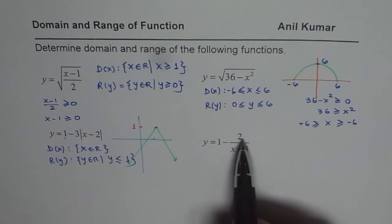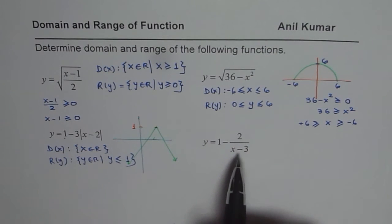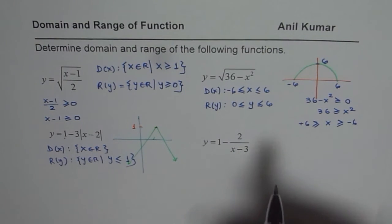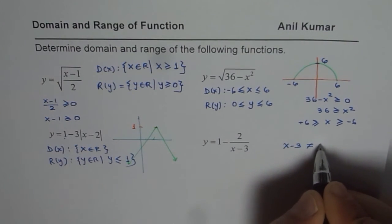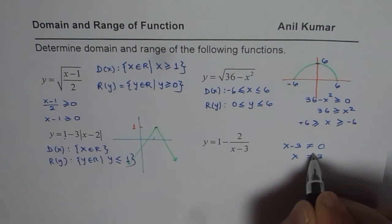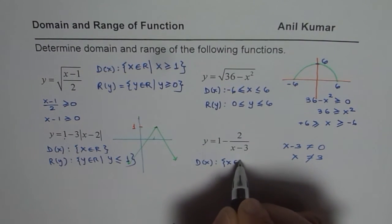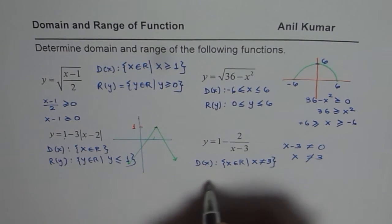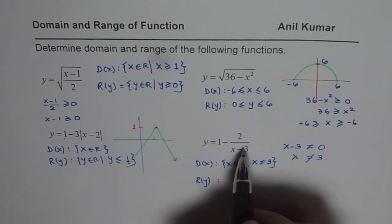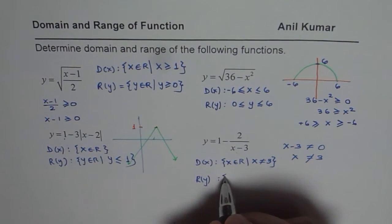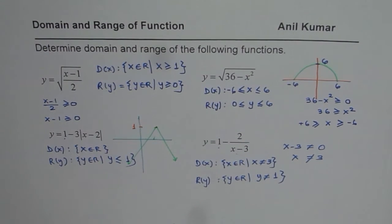Now we have a reciprocal function translated three units to the right, one unit up vertically, reflected, and stretched. For domain and range, the denominator cannot be 0 — so x minus 3 cannot equal 0, meaning x is not equal to 3. Domain is x belongs to real numbers, x ≠ 3. For the range, the reciprocal part can approach 0 but not equal it, so 1 minus 0 is 1 — therefore y belongs to real numbers but y is not equal to 1.